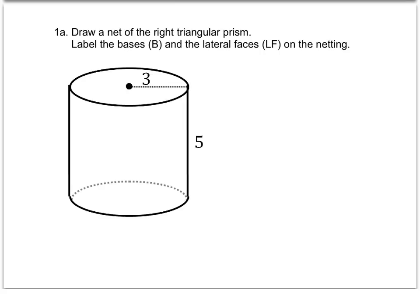Before we draw the net, let's talk about what we think it's going to look like. Think of the cylinder as just being a soup can — that's a good analogy to use. If you flattened out the soup can, we know we're going to have two circles in our net because those are the shapes of the bases. Think of taking the label off a soup can and flattening it out — that's going to represent the lateral face.